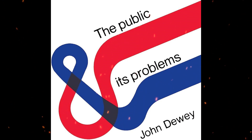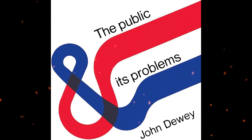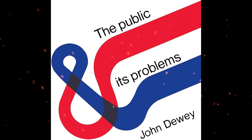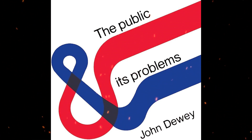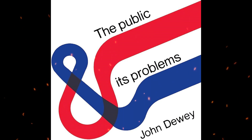By acknowledging the existence of negative externalities, Dewey highlights the interconnectedness of society and underscores the importance of considering these wider consequences in the democratic decision-making process. In The Public and Its Problems, Dewey challenges Lippmann's views on democracy and offers a pragmatic perspective on the role of informed citizenry in shaping effective governance. When that factory produces pollution that adversely affects a neighboring town, the pollution itself becomes what Dewey refers to as a negative externality.